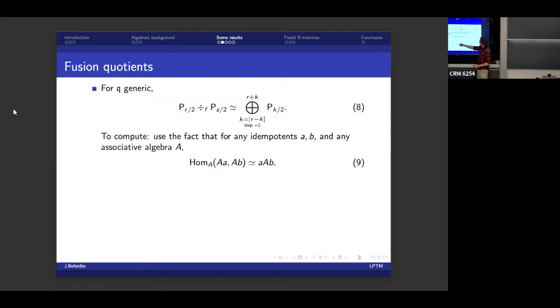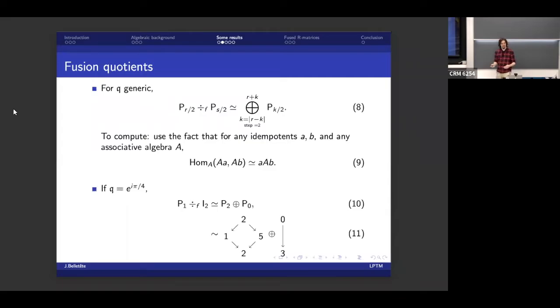It relies on a very simple fact from your algebra courses, if you've ever taken a course on algebra. So if I look at, for any idempotents A and B, if I look at the set of linear maps from the entire algebra times A into the entire algebra times B, this is isomorphic as a vector space to the entire algebra, sandwiched by my two idempotents A and B. And the idea being that at least one of these two can be computed, then you can extract the information.